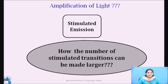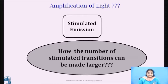In the last session, we have seen that light amplification requires stimulated emissions to occur almost exclusively. So we come to the conclusion that light amplification can take place only through stimulated emission. The question now is, how can the number of stimulated emissions be made larger? Let us look at the conditions under which the number of stimulated transitions can be made larger than the other two transitions.